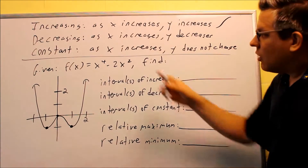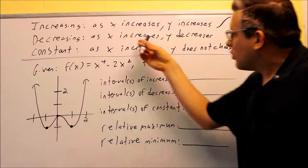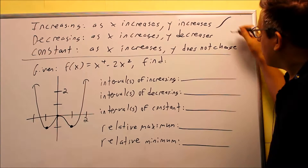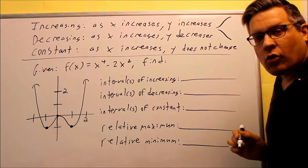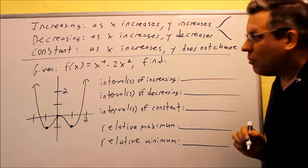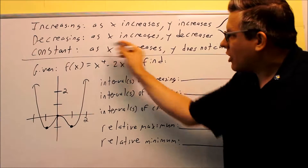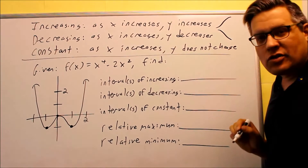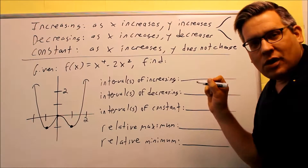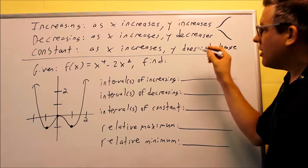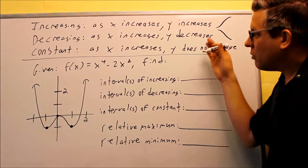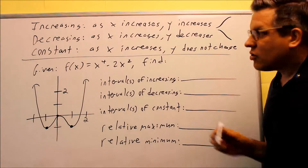For decreasing, you're still going from left to right because x is increasing, but y decreases — meaning you're looking for the part of the graph that's going downhill as you move from left to right. If you have constant, as x increases, y does not change. That means you have a horizontal portion of the graph — it's not increasing and it's not decreasing. That's what we mean by constant.